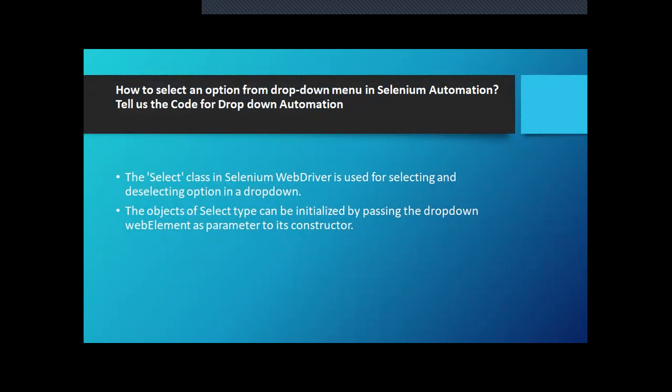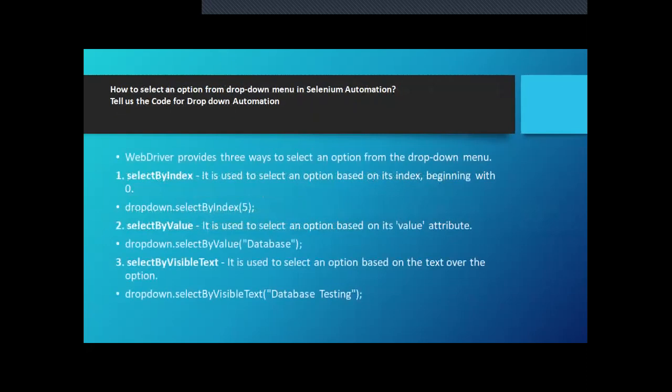The first question is: how to select an option from a dropdown menu in Selenium Automation? Or they might also ask: tell us the code for dropdown automation. So first of all, it is going to be the Select class, which is used for selecting and deselecting an option in a dropdown. We will be passing the web element as a parameter to the constructor, and we will be creating objects of Select type.